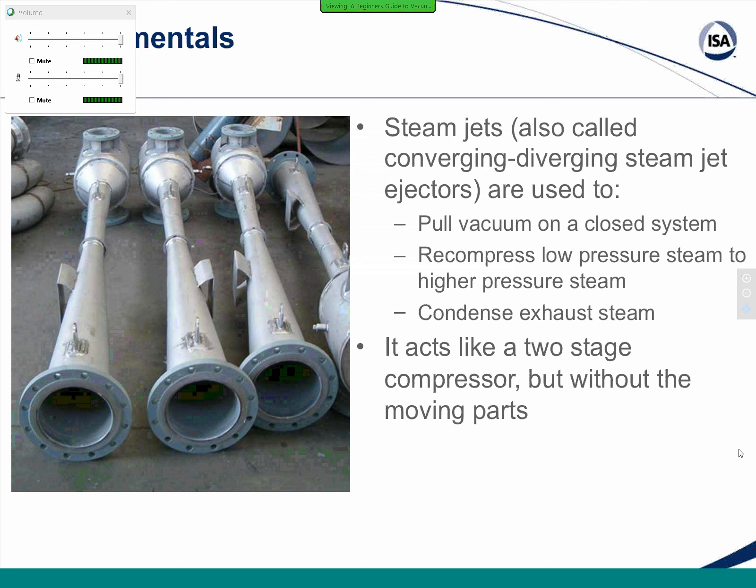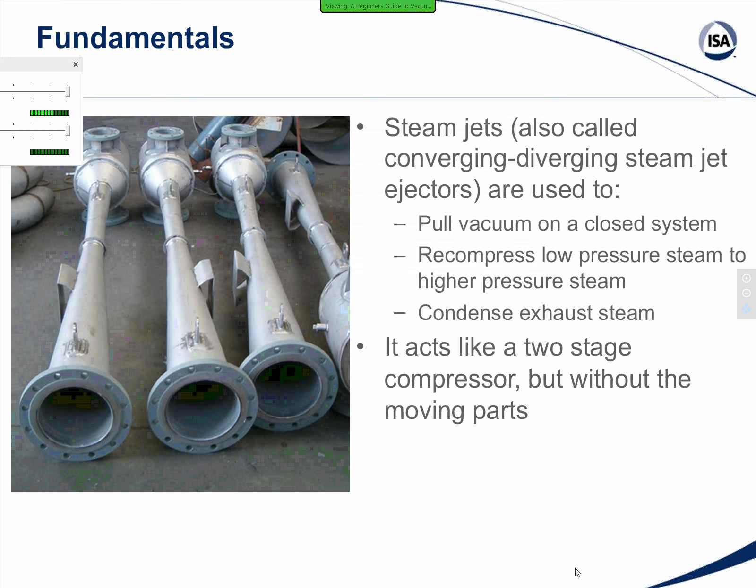If you haven't seen one before, here's a picture of a few steam jet ejectors. These are commonly used to pull vacuum on a closed system, like batch reactors that I have here on site. In addition, they can be used to recompress steam to higher pressures or even to condense steam. If you're familiar with the concept of a compressor, the way that these work with the converging and diverging design acts as a two-stage compressor but without all the upkeep that you normally have with moving parts. This makes ejectors more reliable than a vacuum pump system, at least in terms of direct maintenance, but they have plenty of system complications that we'll be talking about over the next few slides.